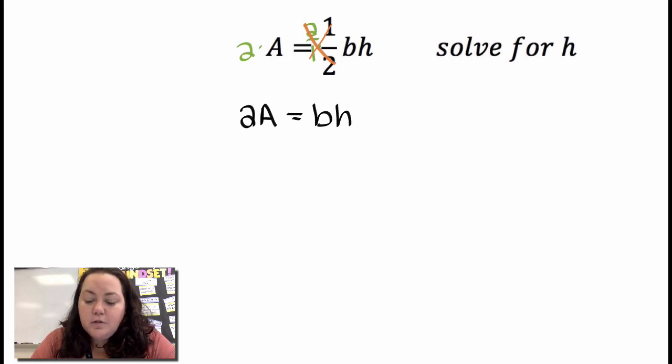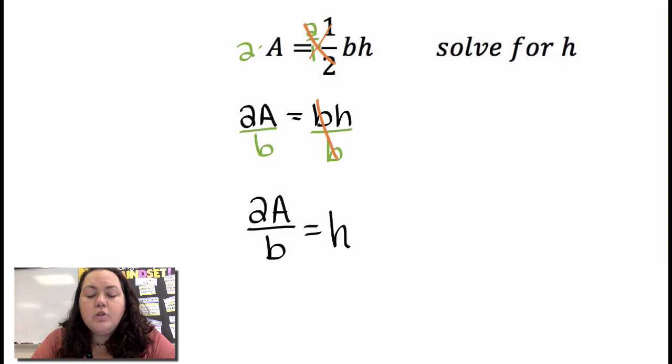Again I'm trying to get h by itself, so I'm going to get rid of the b by dividing both sides by b. So I have 2a divided by b equals h.